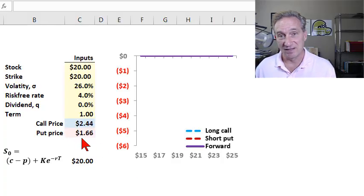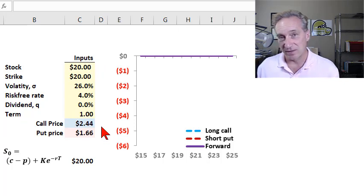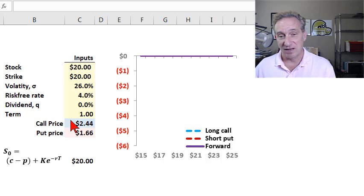Put call parity gives us a necessary relationship between the price of a European call option and the price of a corresponding European put option. In my example, the call price is $2.44, and the price of the European put is $1.66. I have priced these according to the Black-Scholes-Merton model, but my focus here is not the valuation.